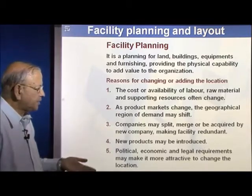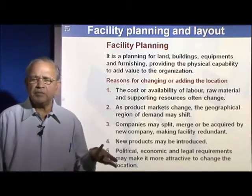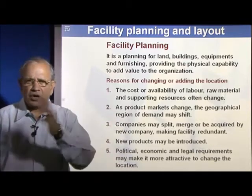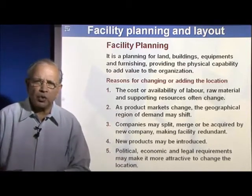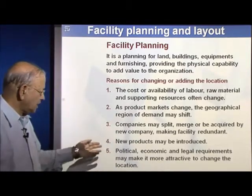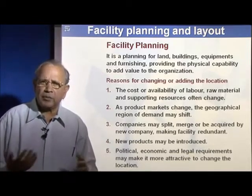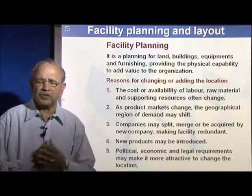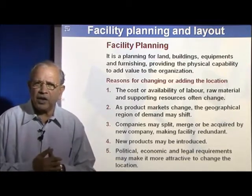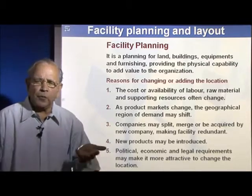Companies may split, and new companies may come in. Certain facilities become redundant because the new factory you acquired already has them. Similarly, new products may be introduced. You have been producing one type of product, and a new type has come in. Some companies started working on TVs and then went into home appliances, which calls for a different set of machinery — so they had to shift to an entirely new plant.